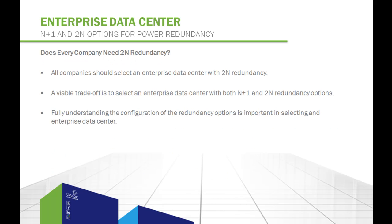If costs were not a factor, then of course all companies should select an enterprise data center with 2N redundancy. However, fully redundant environments are more expensive, and because companies must operate with established budget parameters, they may not be able to afford 2N redundancy across the board. A viable tradeoff is to select an enterprise data center with both N plus 1 and 2N redundancy options. Then companies can use 2N for the most mission-critical environments and N plus 1 for those operations not likely to be affected in a major way by an unplanned power outage.